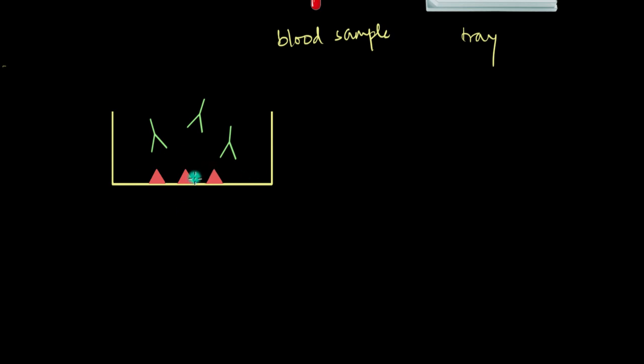Each of these wells is coated with certain HIV proteins. So these triangles which you can see over here, these are the HIV proteins, aka they are the antigens. So they are the antigens, right? Now what we are going to do is that we are going to add the blood sample into this well, the well with the fixed HIV proteins at the base.